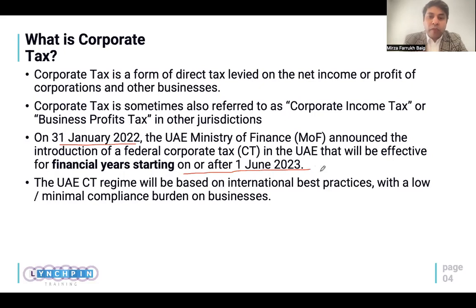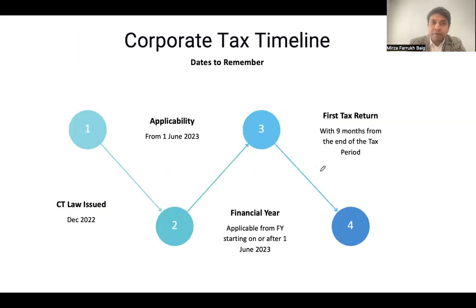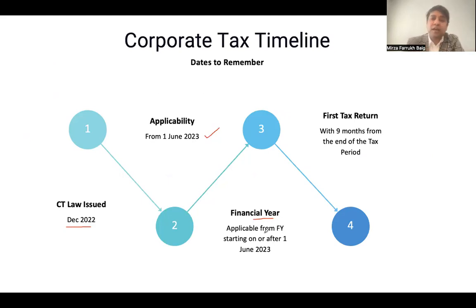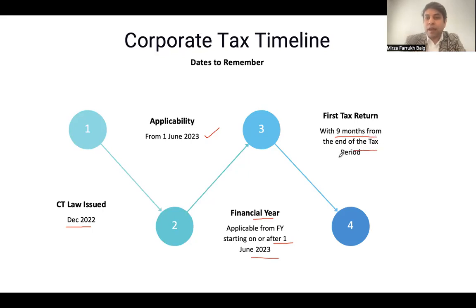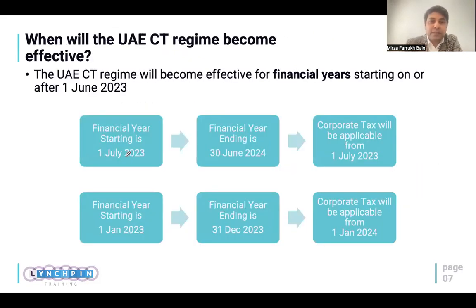The CT was announced about a year ago, in January. It will be applicable on the financial year starting on or after 1st of June 2023. So from next year, corporate tax will be applicable. The CT is issued in December this year, applicable from June next year. The filing of the first CT return would be after nine months from the end of the tax period.